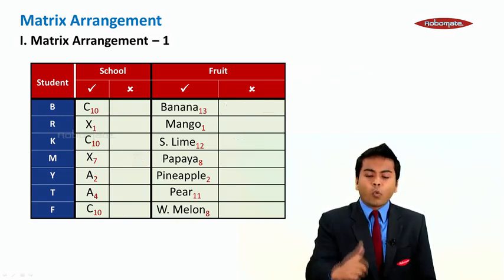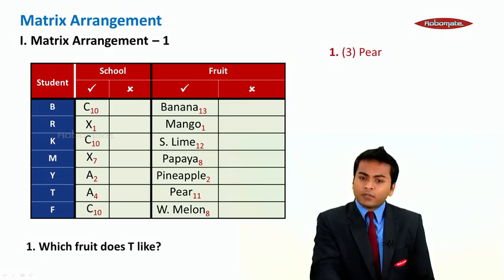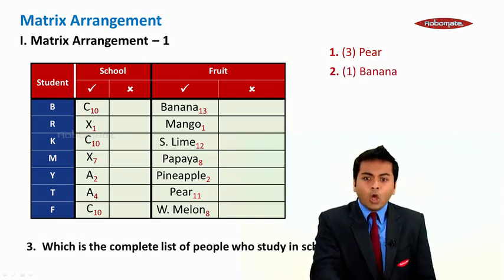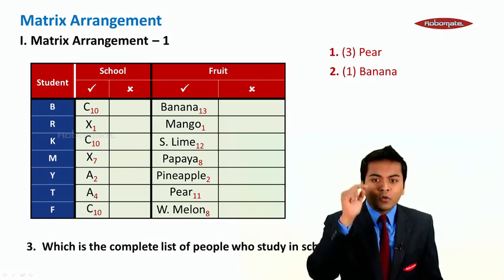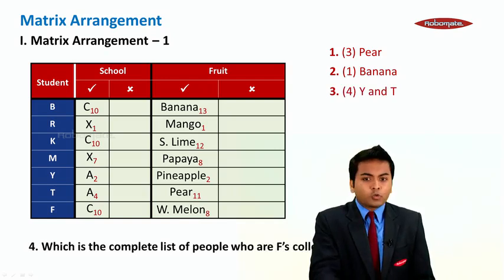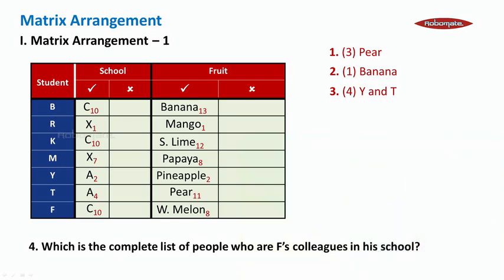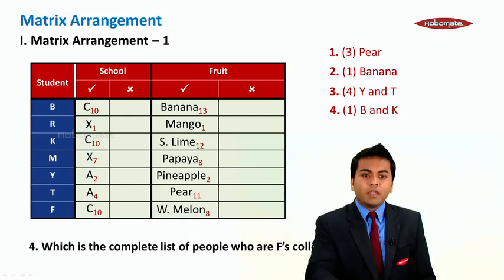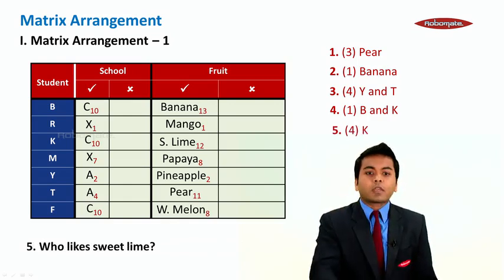Now let's answer the questions. Which fruit does T like? Pear. Which fruit does B like? Banana. Who studies in school A? Y and T. Who are F's colleagues in his school? F studies in school C, so the answer is B and K. Who likes sweet lime? K. That completes the matrix arrangement problem.